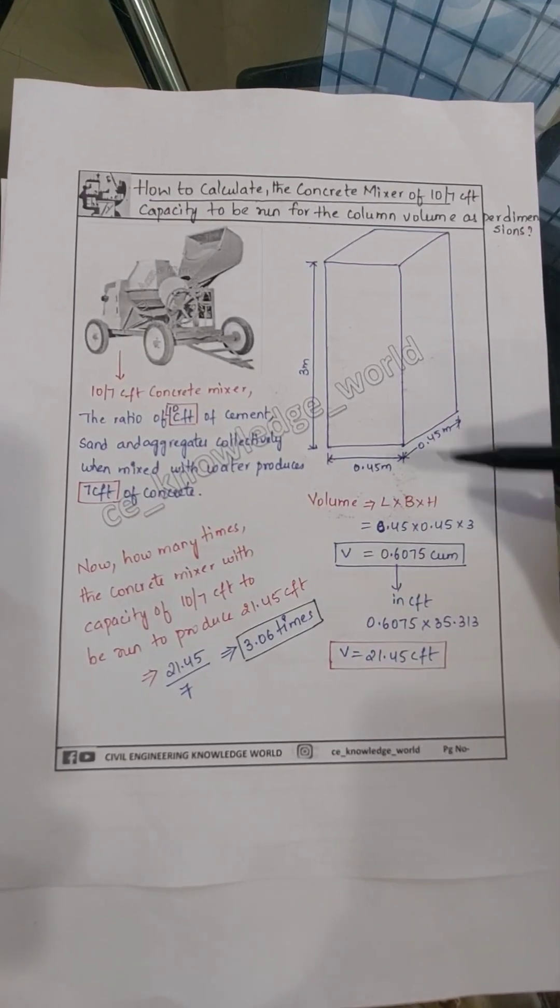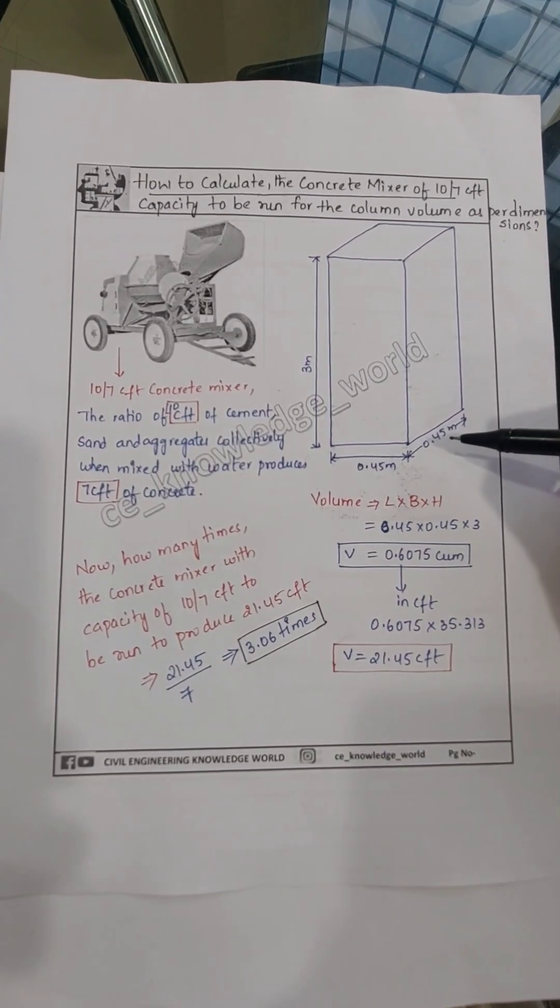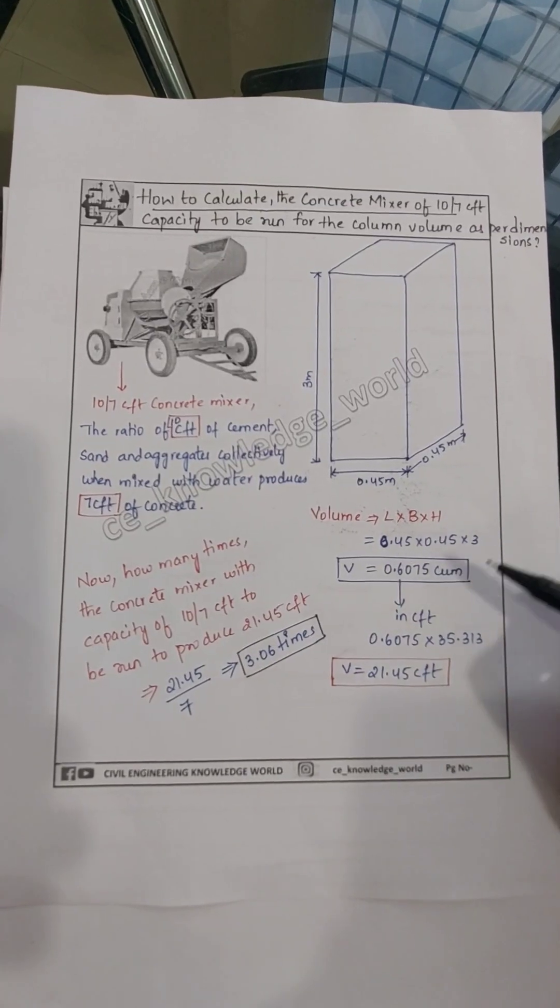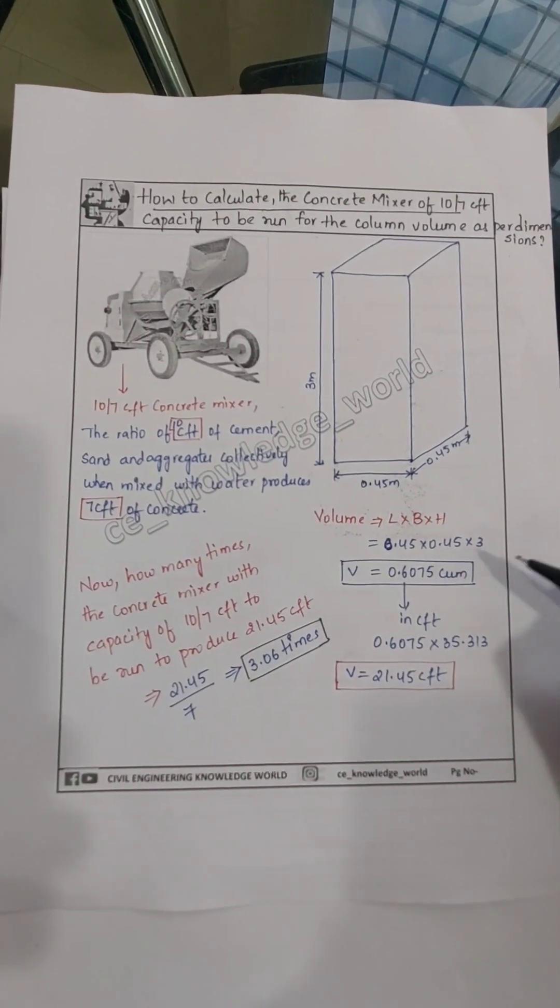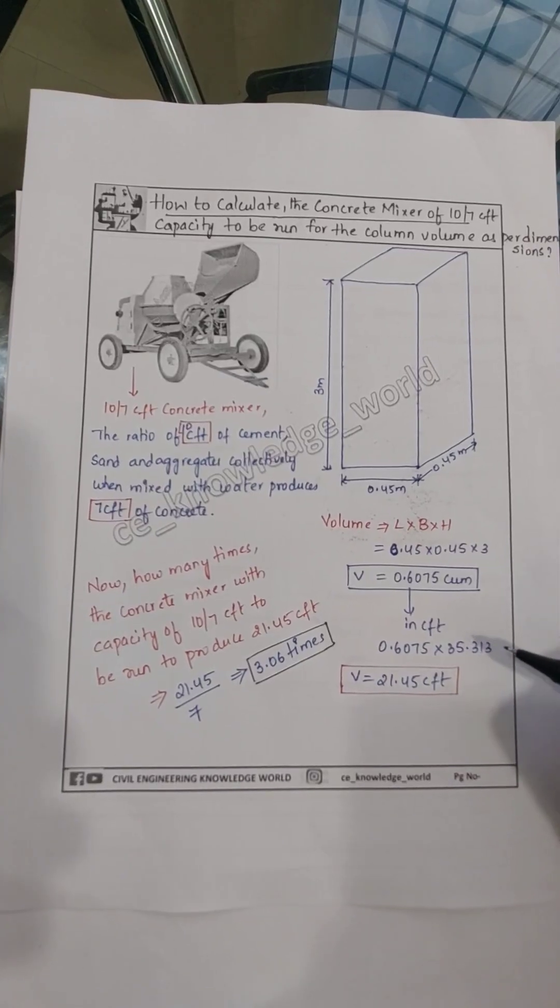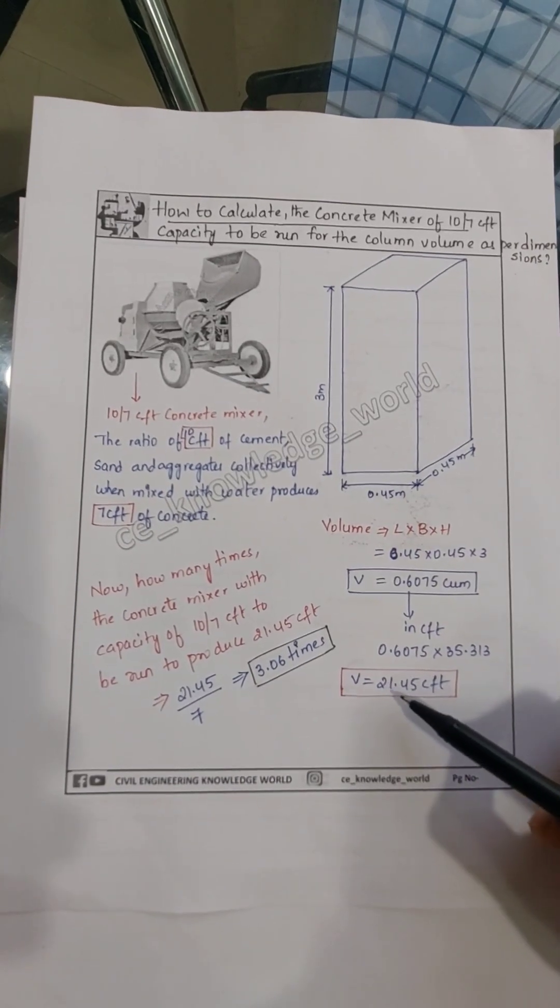The volume equals length into breadth into height, so the length is 0.45 meter, the width is 0.45 meter, and the depth is 3 meter. After multiplication, we get the volume is 0.6075 cubic meter. When we convert cubic meter to cft, we multiply by 35.313, which gives us a volume of 21.45 cft.